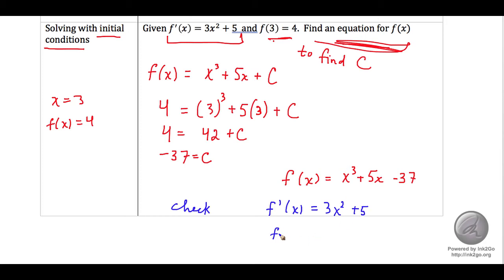f of 3 would in fact be equal to 3 cubed plus 5 times 3 minus 37. This would be 27 plus 15 minus 37. 27 and 15 is 42 minus 37 is in fact equal to 5.